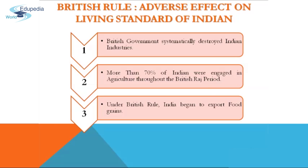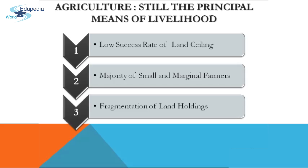Agriculture is still the principal means of livelihood in India, and land is the primary asset of rural people. The ownership of land is an important determinant of material well-being, and those who own some land have better living conditions.